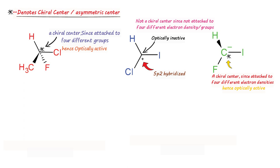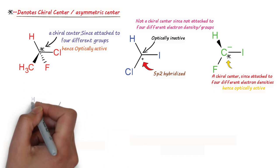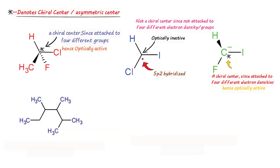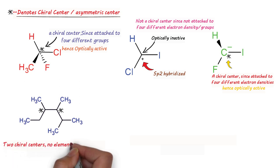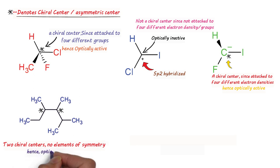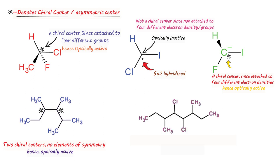Now talking about compounds containing more than one chiral center: in the first example we have two chiral centers, and due to the lack of any plane of symmetry or center of symmetry, it is optically active. In the second case, there are four chiral centers, but the presence of four chiral centers does not guarantee that the molecule will be optically active.